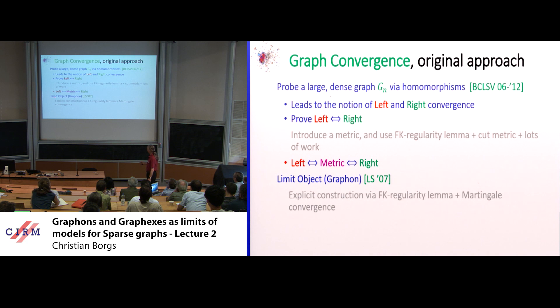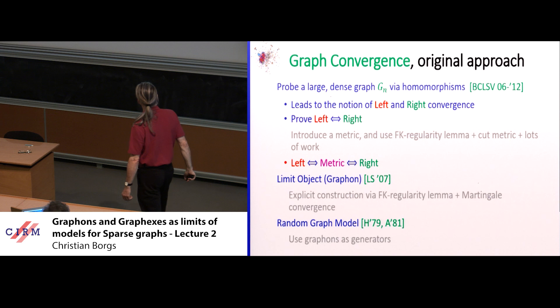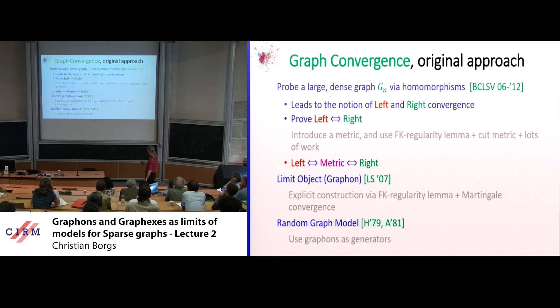Lovász and Szegedy came up with graph limits — not only as limits of sequences, but also usable to generate random graphs, as Jennifer showed. That actually goes back to the statistics community: Aldous and Hoover in the late 70s and early 80s.